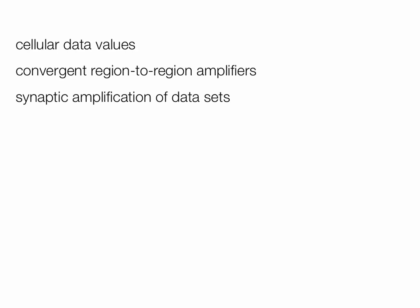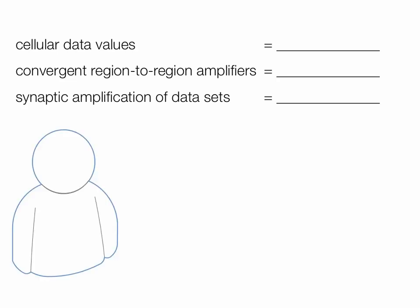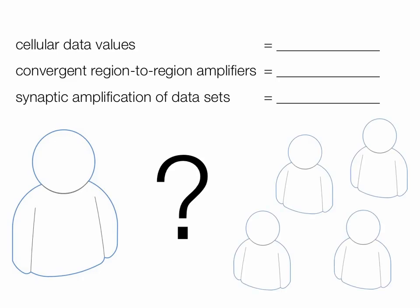The true power in emergent terms is that you create the term and then meaning comes later. We have some really powerful, evocative terms here: cellular data values, convergent region-to-region amplifiers, synaptic amplification of data sets. We can look at those terms and start to build meaning into them. We can do this individually, but that's where crowdsourcing comes in — we generate enough of these emergent terms, get together, discuss and research them, and together we can build the meaning into these terms.